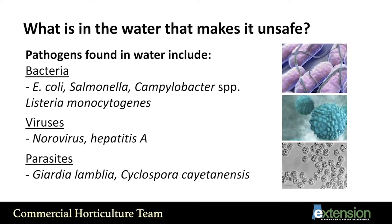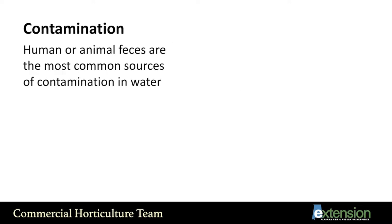Cyclospora is an emerging parasite in the U.S. It has been common in South and Central America, but it's now being found in water bodies in North America. Contamination happens mostly from human or animal feces, which can contaminate the water when they come in contact with it.